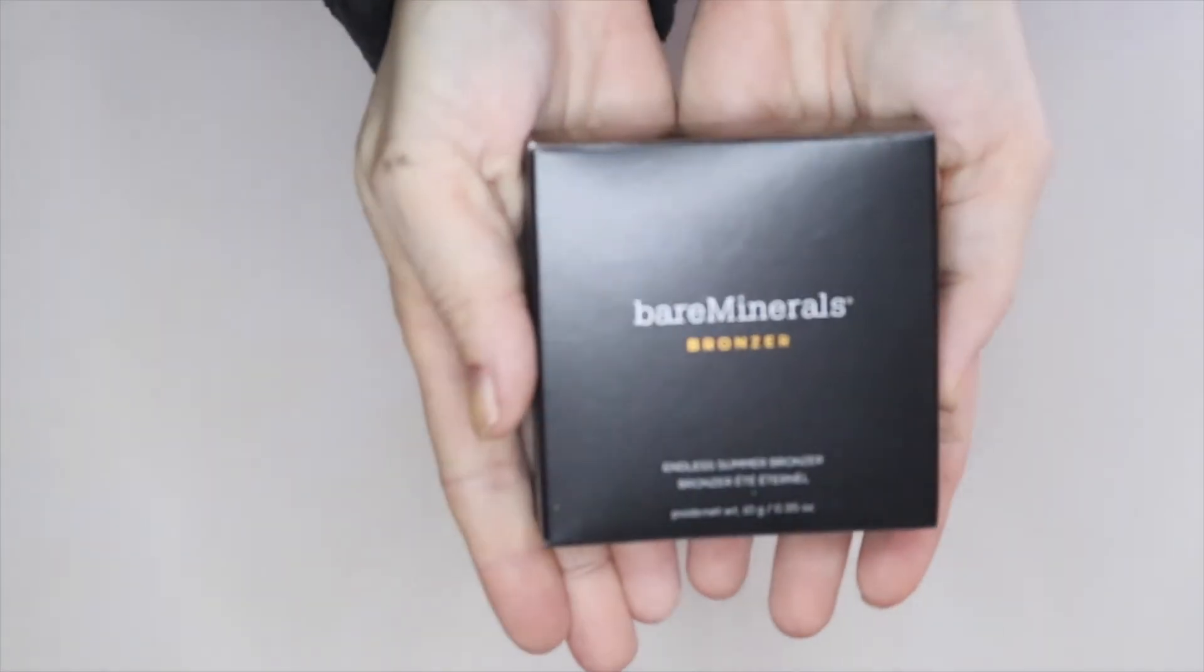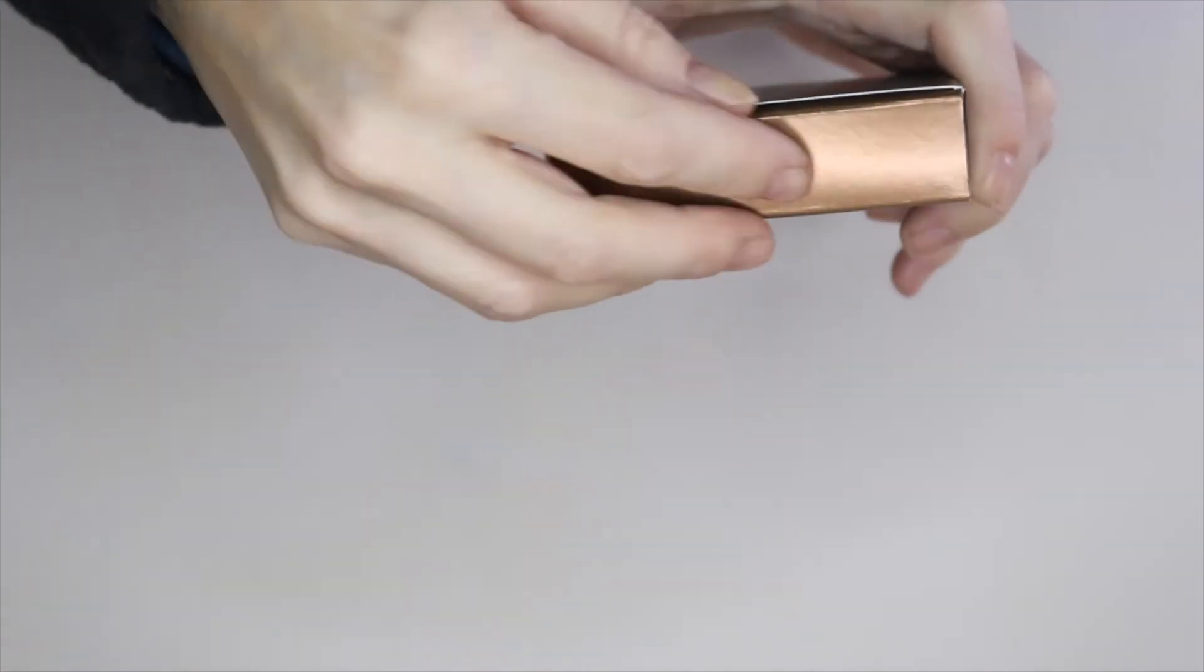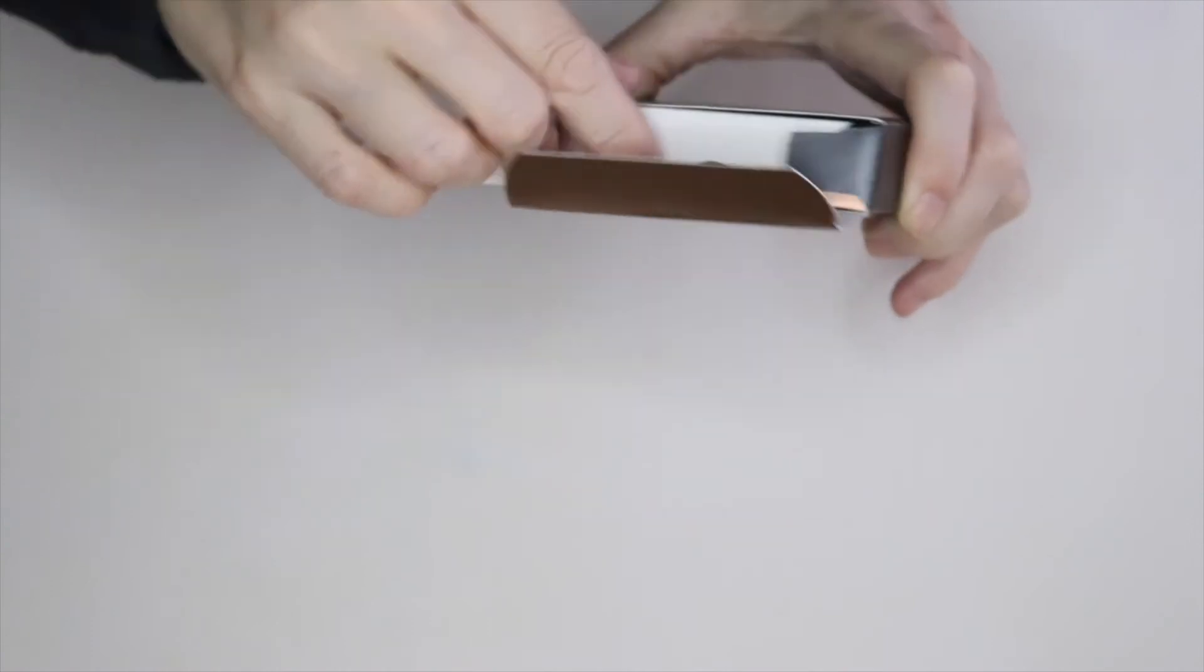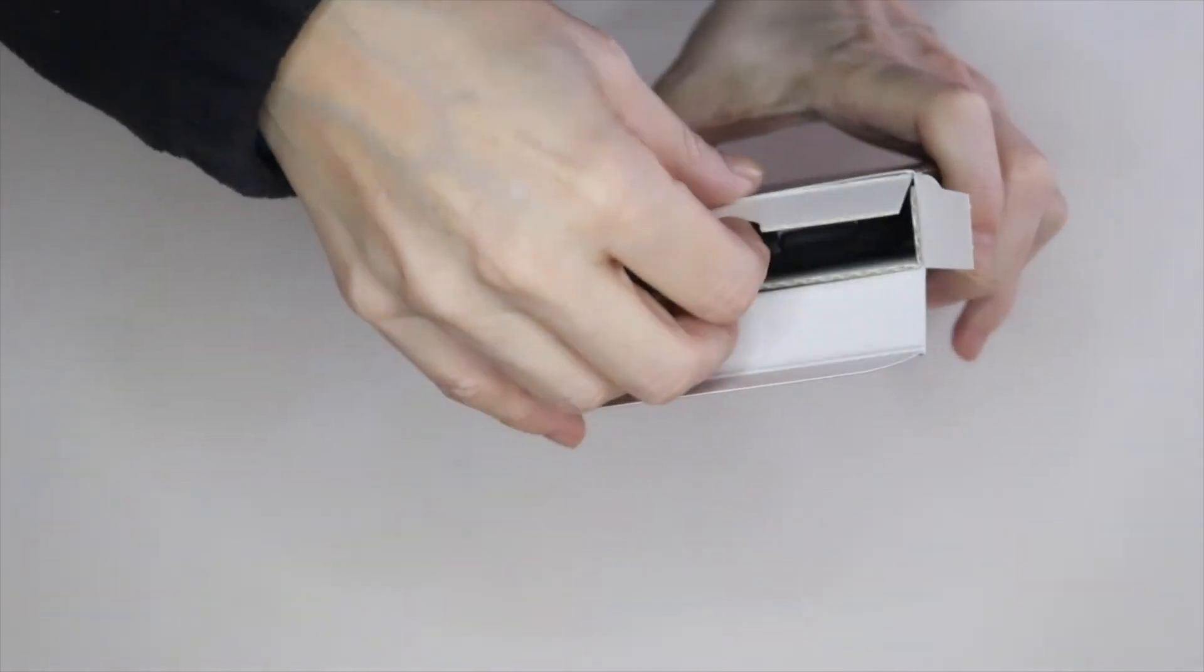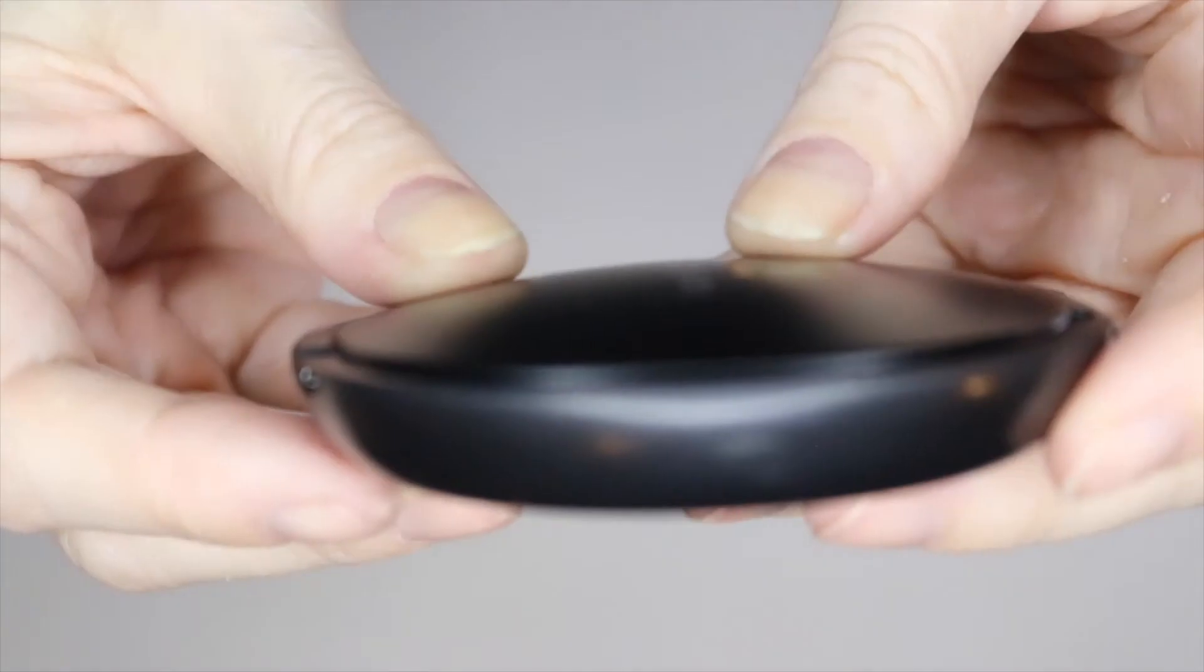I use Bare Minerals bronzer as a contour. It works great. You can get it in a variety of shades, and it also works well as a bronzing powder all over your face and neck. This compact is very sturdy as well, and as you can see, it opens with just the click of that little tab.